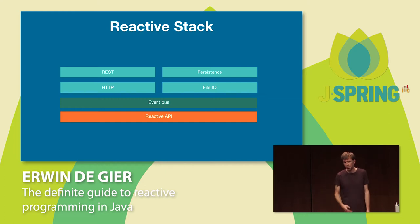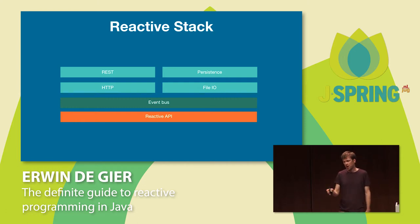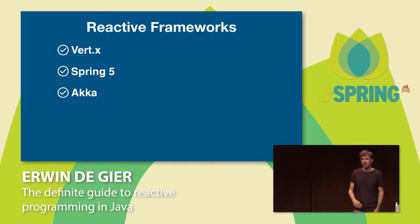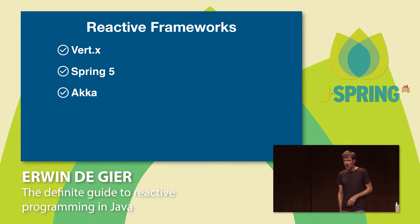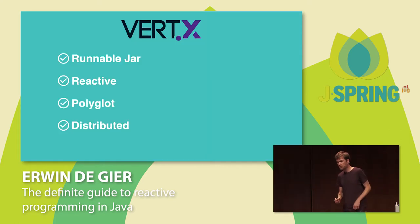A reactive stack would need REST/HTTP, persistence, file IO, and the ability to communicate between different components — so maybe an event bus — and you need that reactive API. The reactive API is RxJava, Project Reactor, or Akka. All the stuff on top is available in different reactive frameworks. A couple of years back I started with Vert.x, which gave me insight on how to do asynchronous programming in Java. Next to Vert.x we also have Spring 5 and Akka. These are the three bigger ones, so let's have a short look at all of them.